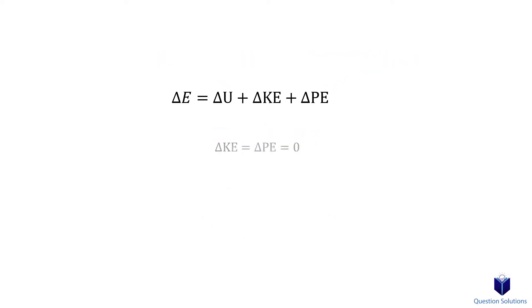Note that in cases where the system is stationary — in other words, there is no change in velocity or elevation — then the change in kinetic and potential energy is zero. So you just end up with the change in internal energy alone.